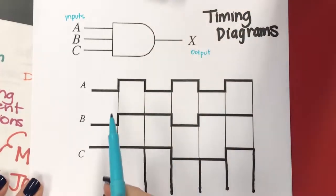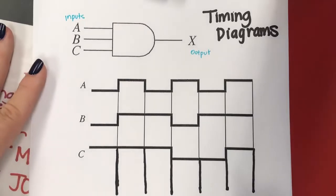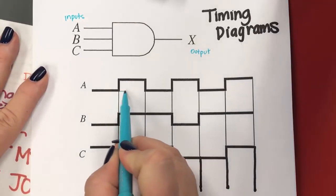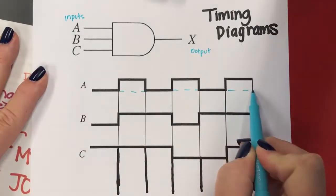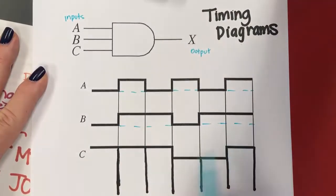And so each one of the inputs is varying at different points, whether it's high or low. And so I tend to come back in and just visually draw a dotted line across where the low value would be for each one of these inputs.